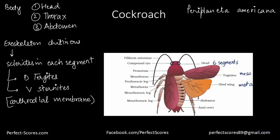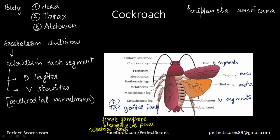The abdomen in both males and females has 10 segments. In females, the 7th segment is board-shaped and along with the 8th and 9th segments it forms a genital pouch. The anterior part of this pouch contains the female gonopore, spermathecal pores, and collateral glands — these three structures are present in segments 7, 8, and 9, which are fused together.